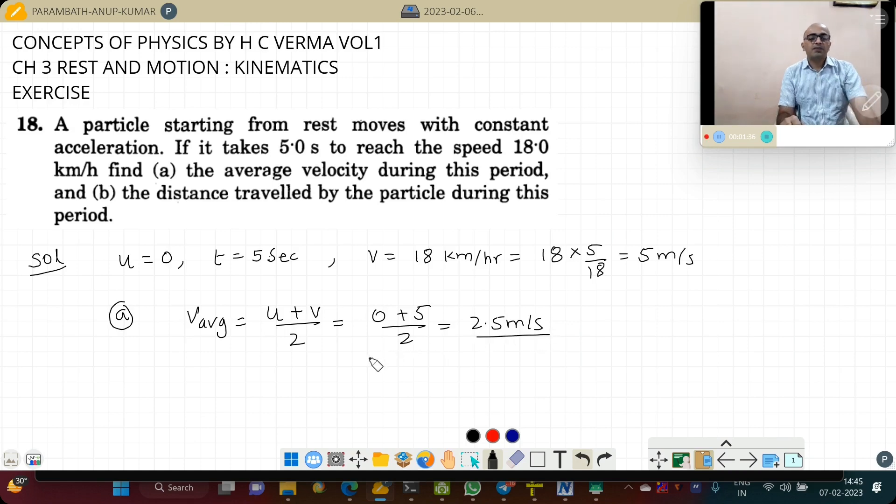Students, please be clear that this is applicable only when this word is there in the question - constant acceleration is there. If it is not there, then you cannot apply this. You will have to apply total displacement divided by total time. That is the only way.